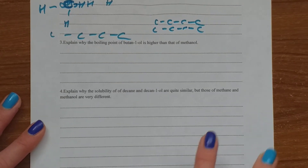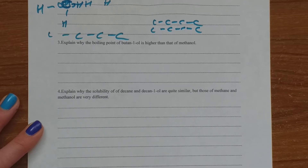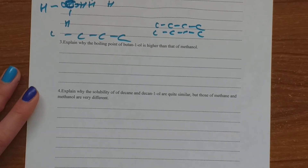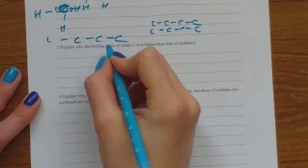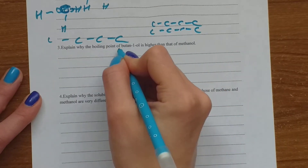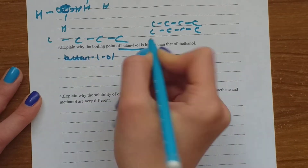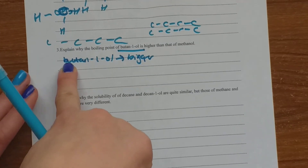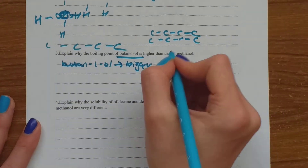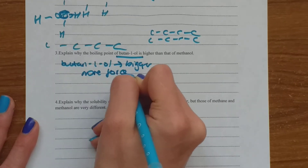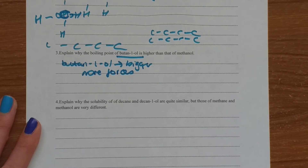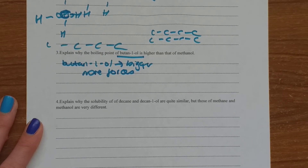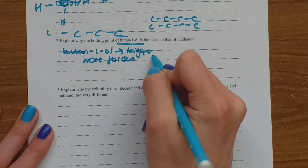Explain why the boiling point of butan-1-ol is higher than that of methanol. This is a very easy question. The only reason for butan-1-ol having a higher boiling point than methanol is because butan-1-ol is a bigger molecule — methanol only has one carbon, butan-1-ol has four carbons. This means butan-1-ol has more van der Waals forces, and because it has more forces, more of them have to be broken before butan-1-ol will boil. That's the only reason: more forces to break.